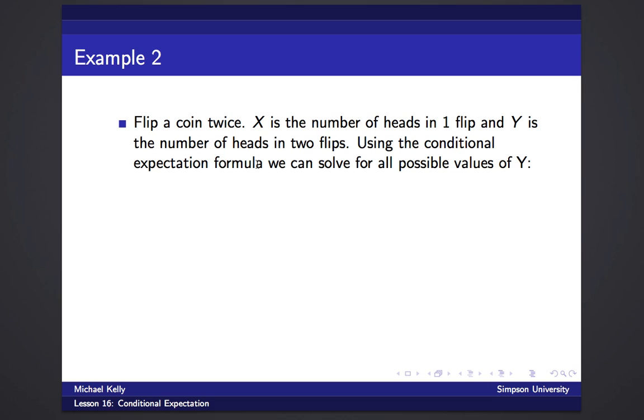So we're going to use the conditional expectation formula to solve for all the values of y. So y could be 0, 1, or 2. And the expected value of x, if y equals 0, this first one. Well, y equals 0 means in the first two flips there are no heads. So that means the first flip isn't a heads, and therefore the expected value of x has to be 0.